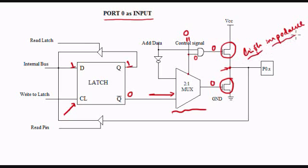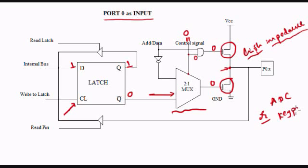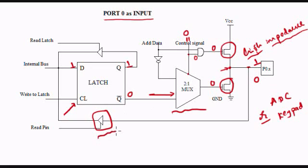Now port 0 is ready to act as an input. An external device — say, for example, maybe an ADC or maybe a keypad — if they want to write 0, they will overwrite the high impedance state and write 0, and we will read that state through this buffer. And if they want to write 1, they will overwrite the high impedance state and write 1, and we can read that data through this buffer.